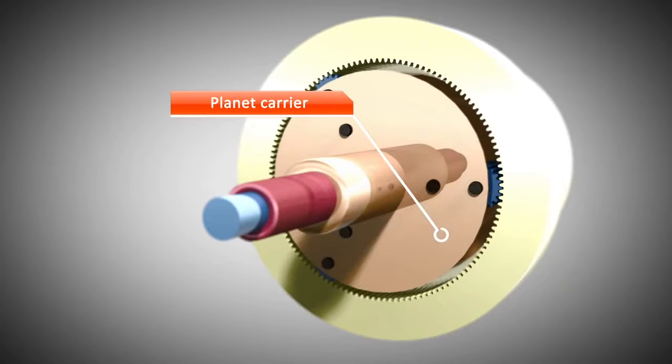With this kind of automatic transmission, five gear ratios can be achieved by locking and connecting components.